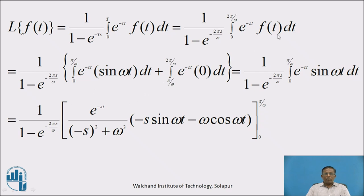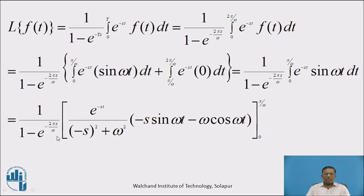To put the value of f(t), we split the integration into a sum of two integrals: 1 upon (1 minus e raised to minus 2πs/ω) into bracket: integration with limit 0 to π/ω of e raised to minus st times a·sin(ωt) dt, plus integration with limit π/ω to 2π/ω of e raised to minus st times 0 dt. The second integral vanishes, so we are left with 1 upon (1 minus e raised to minus 2πs/ω) into integration with limit 0 to π/ω of e raised to minus st times a·sin(ωt) dt.